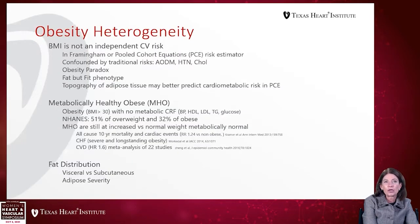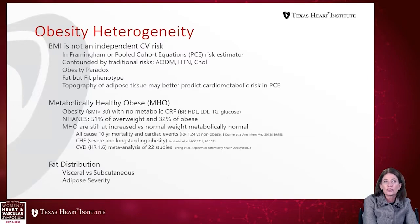So what is it about obesity that gives such heterogeneity? BMI itself has never been determined to be an independent cardiovascular risk modulator — it's not an independent risk factor in the Framingham Heart Study or in any pooled cohort equations for risk estimation. The thought is that traditional risk factors for heart disease — diabetes, hypertension, and high cholesterol — are confounders of obesity.